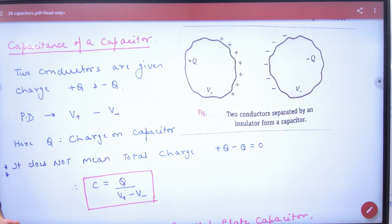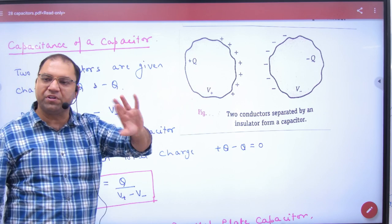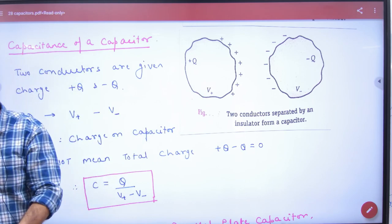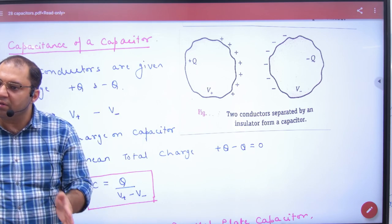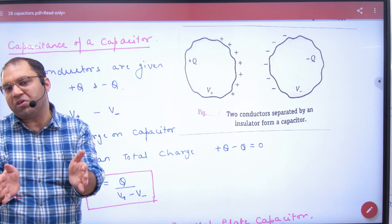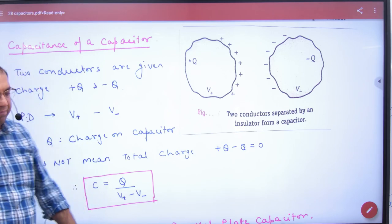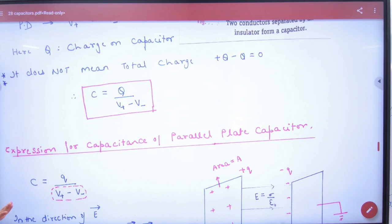So for any body, capacitance, what is it? We can find it out. Shape doesn't matter - sphere, plate, whatever. The charge is what we call, and capacitance will come. Is this point clear?